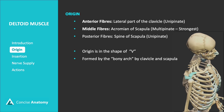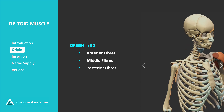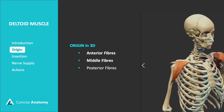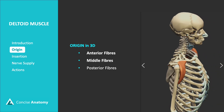The clavicular part arises from the anterior surface of the medial half of the clavicle. Here is a closer look at the three groups of fibers of the deltoid muscle — anterior, middle, and posterior.